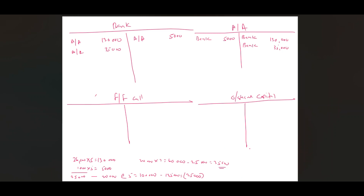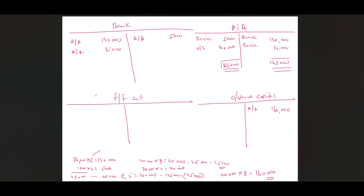Transfer the entire amount received on application and allotment to the ordinary share capital account. Application at $5 and allotment at $3 = $8 per share for 20,000 shares = $160,000. Transfer: debit application and allotment account $160,000, credit ordinary share capital account $160,000 — this closes the account. Then for the first and final call: 20,000 × $2 = $40,000. Debit bank $40,000, credit first and final call account $40,000. Then transfer to ordinary share capital account, closing the first and final call account.